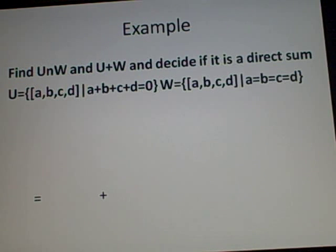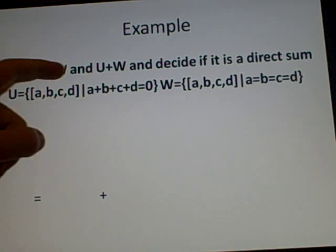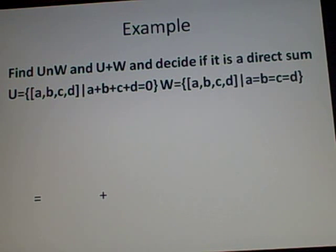Now an example to hopefully make sense of it. Where I've written [a,b,c,d], it's the vector [a,b,c,d], just to save space on the sheet. We're asked to find U∩W and U+W and decide if it's a direct sum.